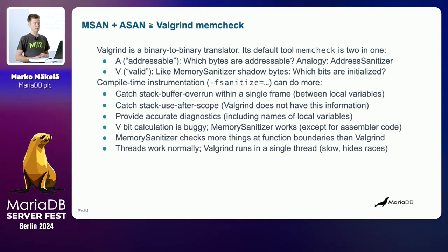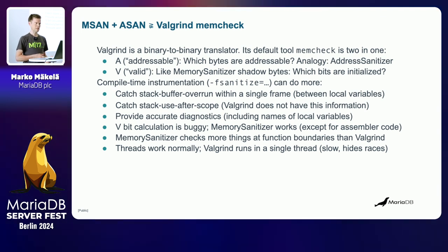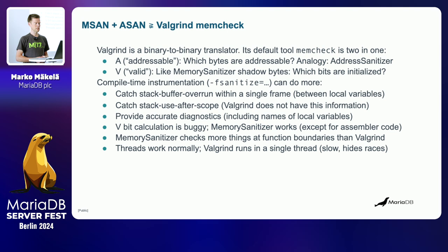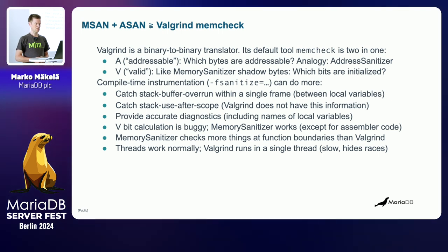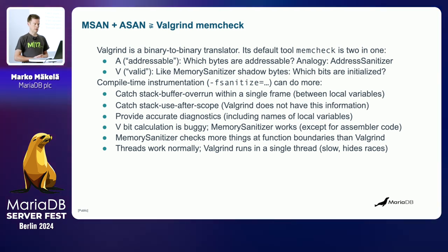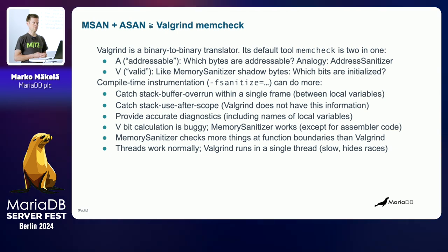The other thing Valgrind does is keep track of use of uninitialized data. It's allowed to copy uninitialized data between data structures, but as soon as the data is being compared it must be valid, or if it's being passed to something like a system call or printf that will expose the uninitialized value to the environment — that's an error. The corresponding compiler-based tool for that is memory sanitizer.